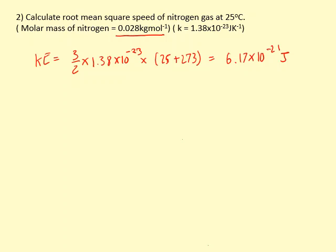What I'm going to do is this is going to equal 1 over 2 m crms squared. That's the kinetic energy, but the m there is the mass of one particle, so I need to find the mass of one particle.